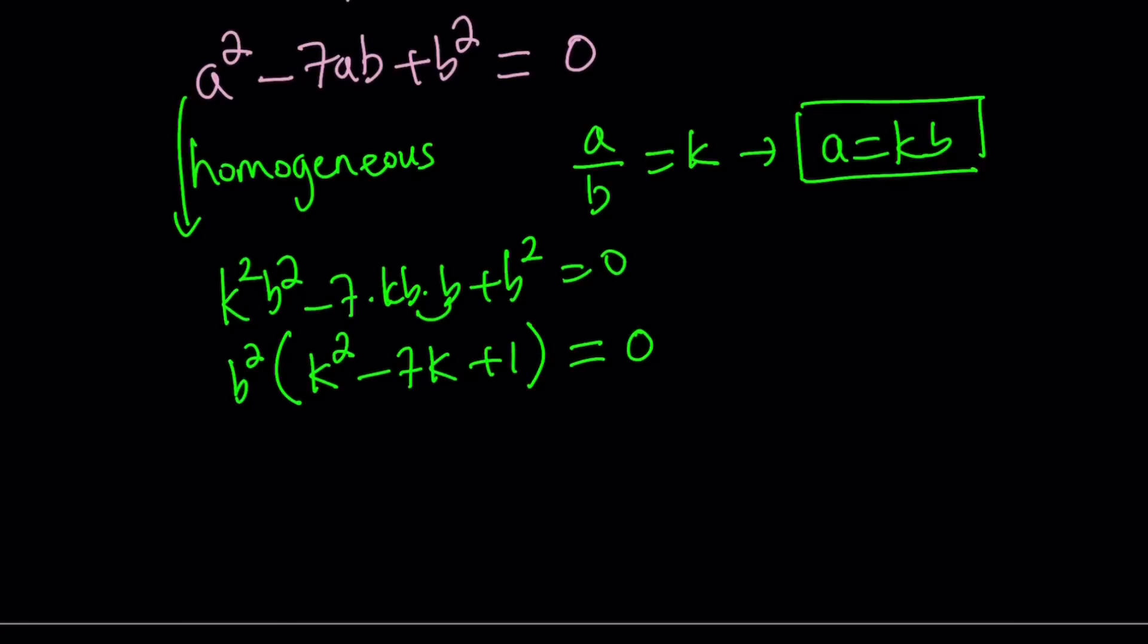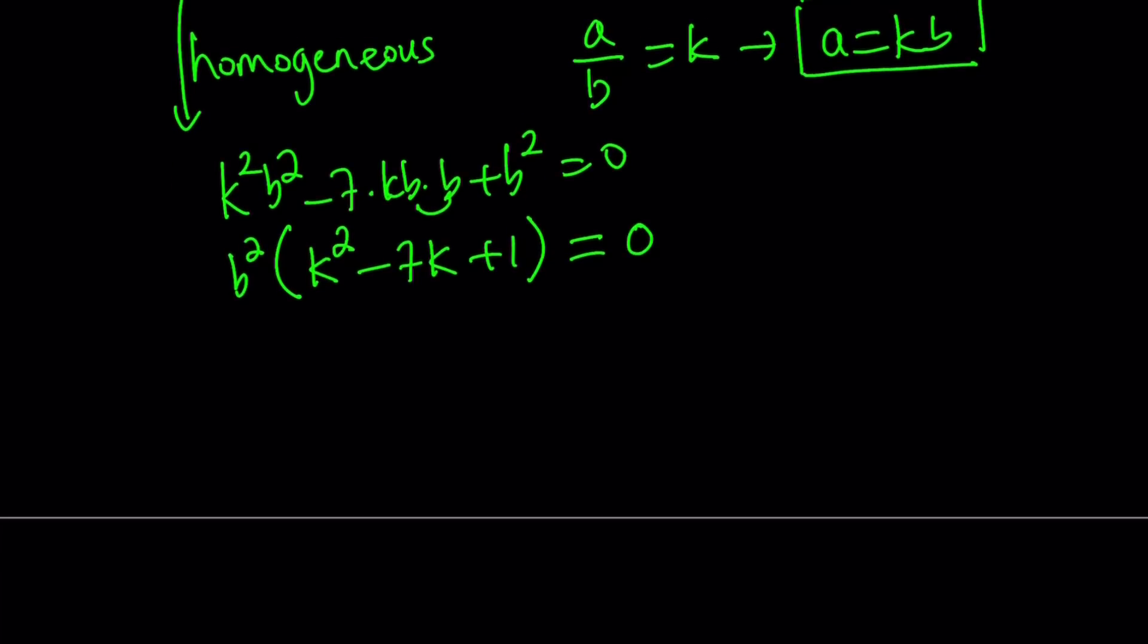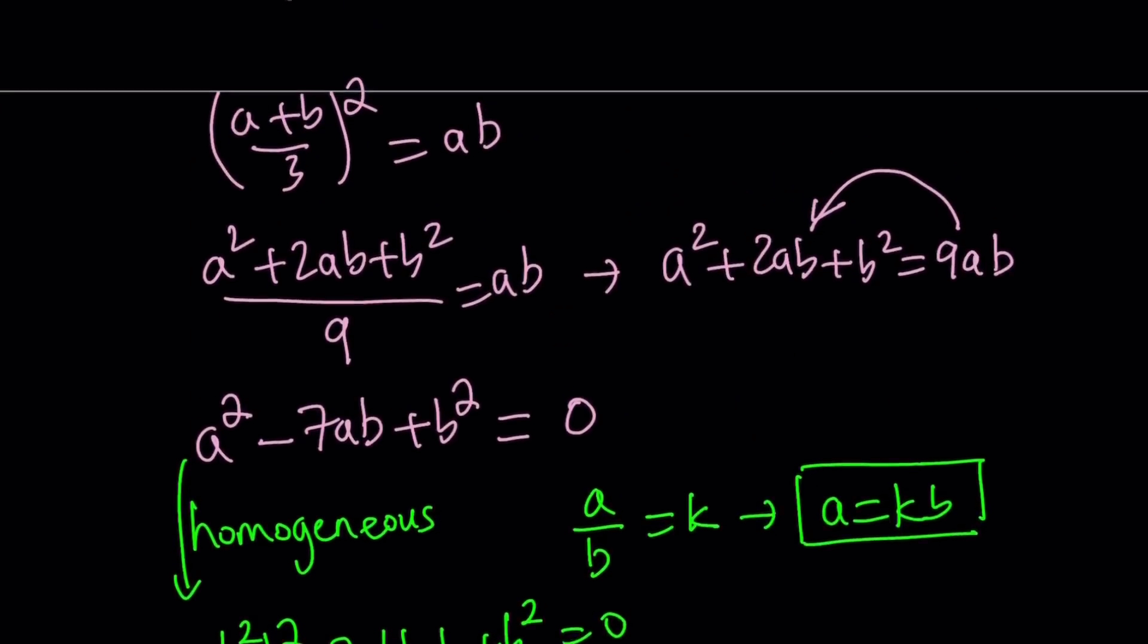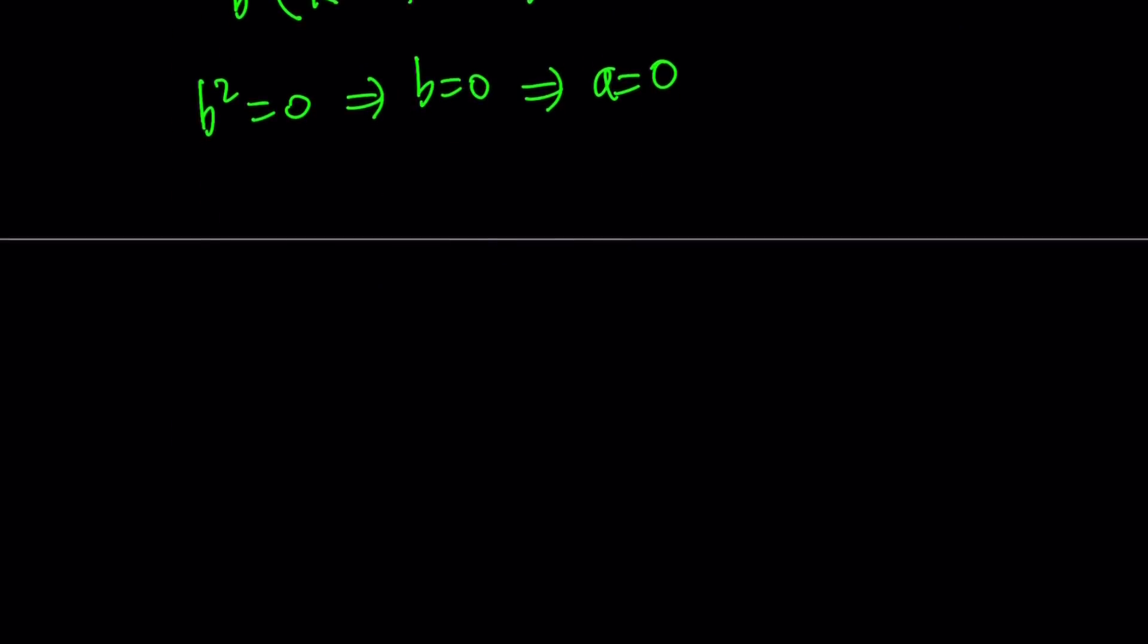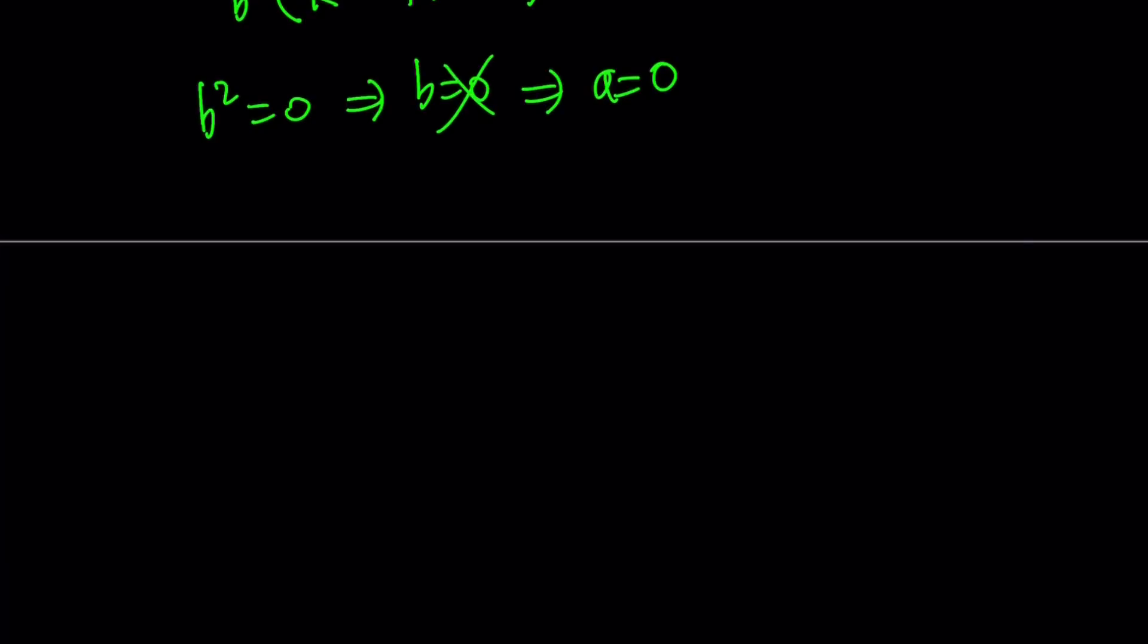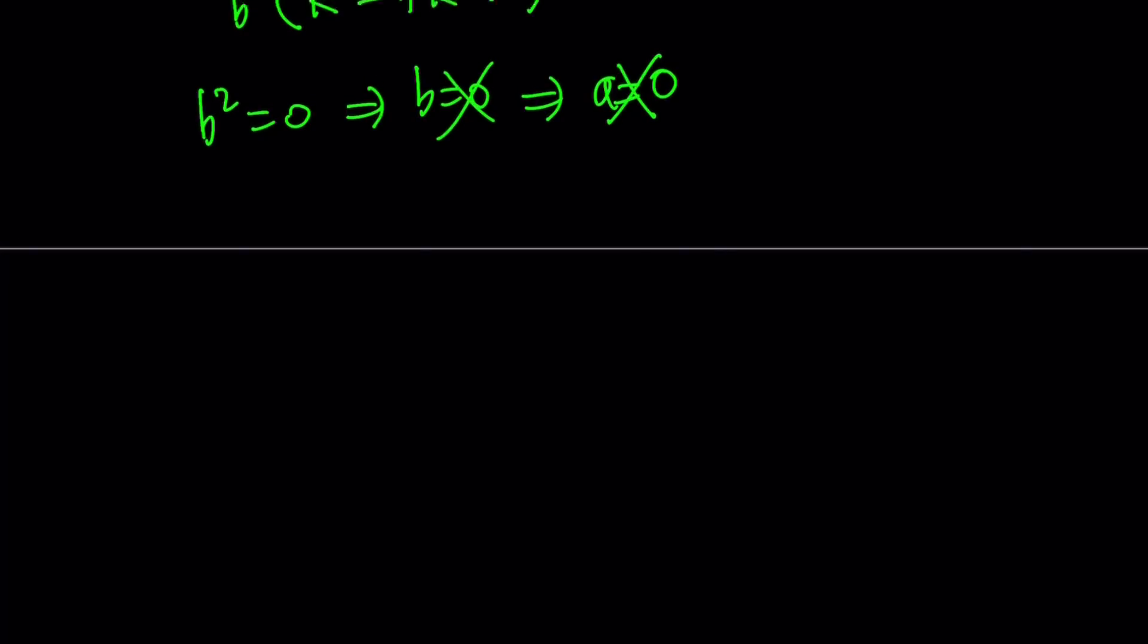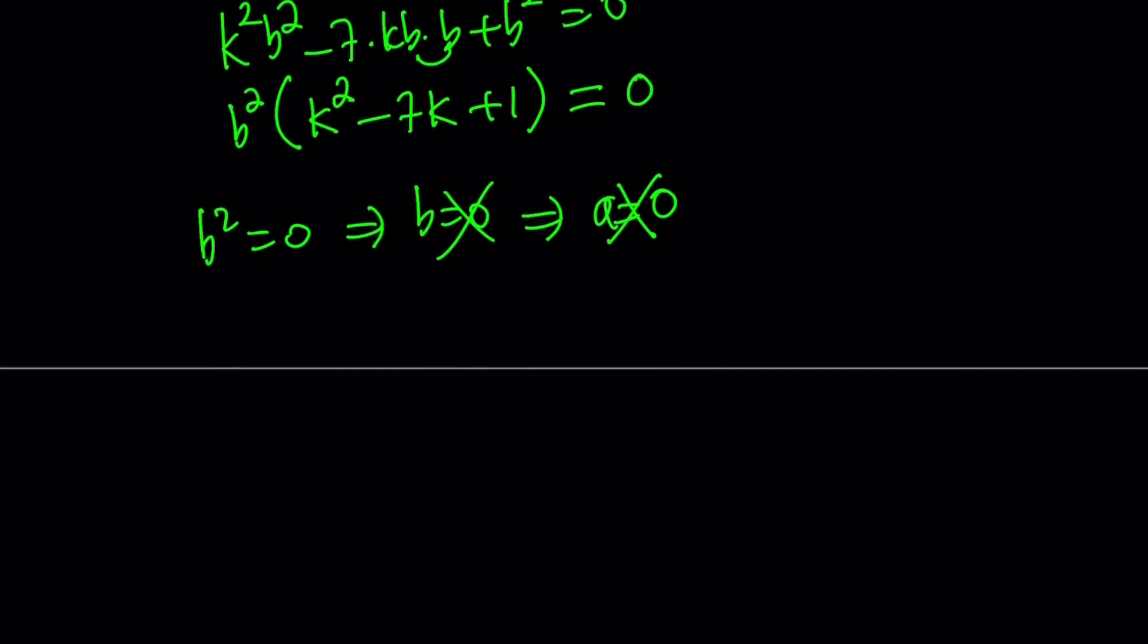So now notice that we get two results. Either b^2 = 0 or k^2 - 7k + 1 = 0. b^2 = 0 implies b = 0. And in the original problem, if you replace b with 0, you get a = 0. But remember our condition: a and b have to be positive because we're dealing with a natural log. So these are not acceptable, which means b^2 does not equal 0, which means the other factor needs to equal 0, which is k^2 - 7k + 1 = 0.